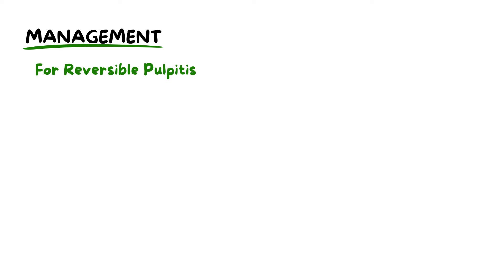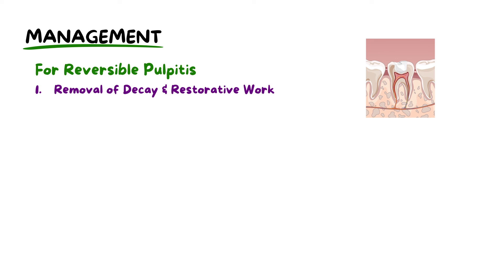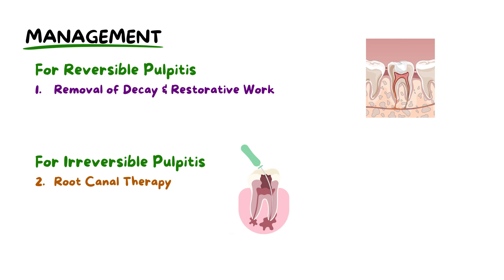For reversible pulpitis, treatment focuses on addressing the decay and pain through restorative treatments. In contrast, irreversible pulpitis may necessitate further intervention like root canal therapy, removing the infected pulp to preserve the tooth. Advanced cases may require tooth extraction as an alternative to root canal therapy, particularly when preservation is not feasible and the tooth is too far damaged.